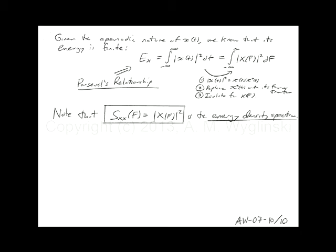Here's one lesson learned in lecture seven. If you have a continuous-time periodic time domain signal, the frequency representation consists of aperiodic discrete values at zero, f₀, 2f₀, 3f₀, to plus and minus infinity. If you have a continuous-time aperiodic time domain signal, its frequency representation will also be aperiodic in the frequency domain and is a continuum of values.